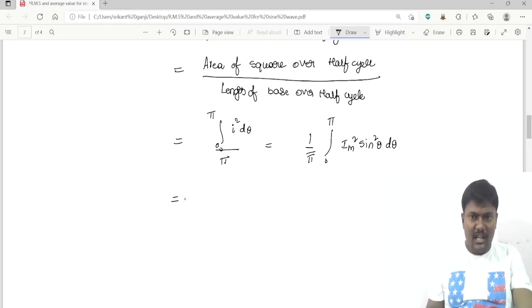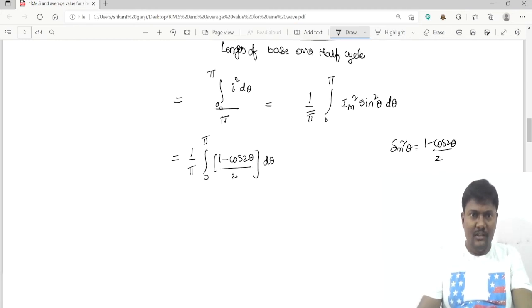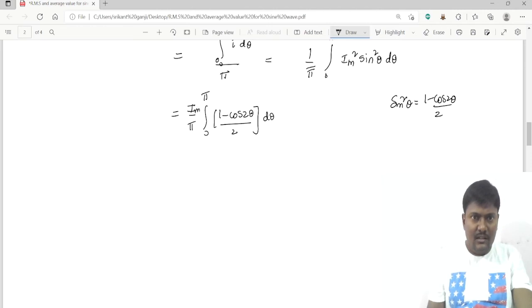Sine square theta can be written as 1 minus cos 2 theta divided by 2. So this is I_m square by 2π, integration 0 to π, 1 minus cos 2 theta into d theta.